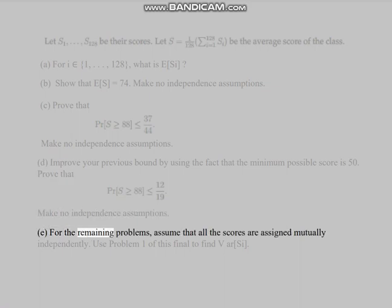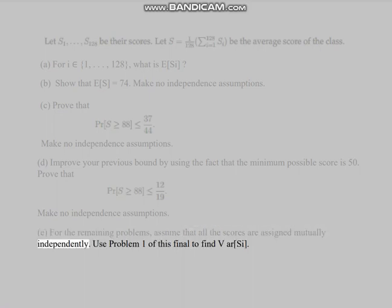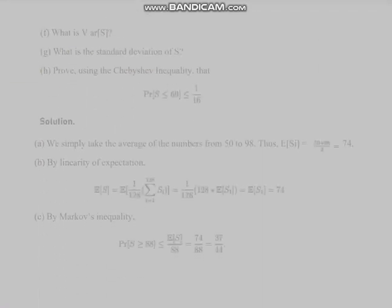Part (e): For the remaining problems, assume that all the scores are assigned mutually independently. Use problem 1 of this final to find VAR(S_i). Part (f): What is VAR(S)? Part (g): What is the standard deviation of S? Part (h): Prove, using the Chebyshev inequality, that Pr(|S - 74| ≥ 10) has some bound. Solution: